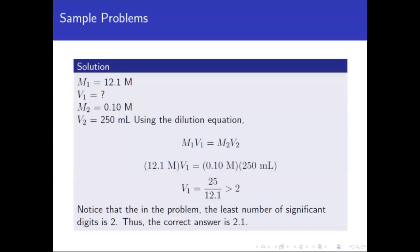So notice that in the problem, the least number of significant digits is 2. So the correct answer is 2.1. It's not exactly 2, but greater than 2.